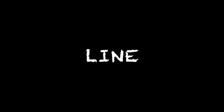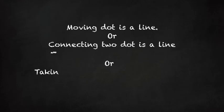When we start to draw, the first thing we do is to draw a line. A line can be described as moving dot or connecting two dots. Some may also define as taking a dot for a walk.